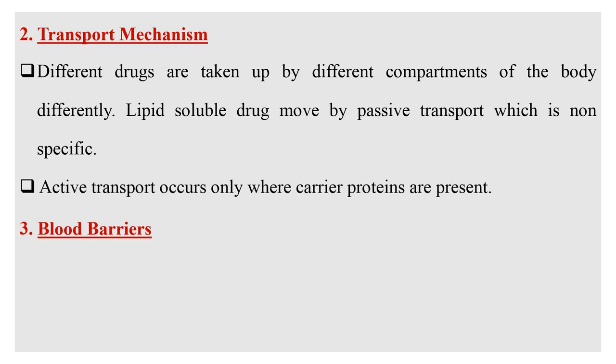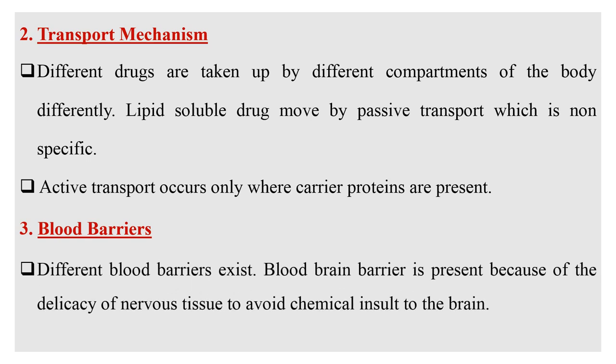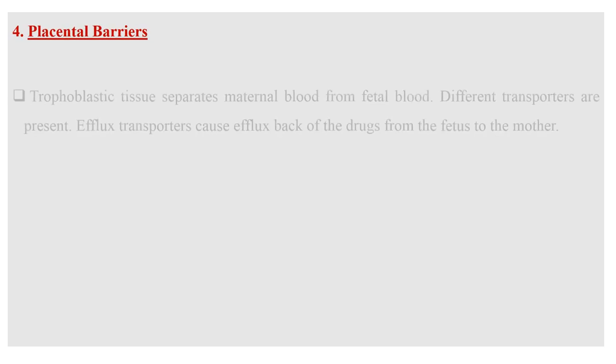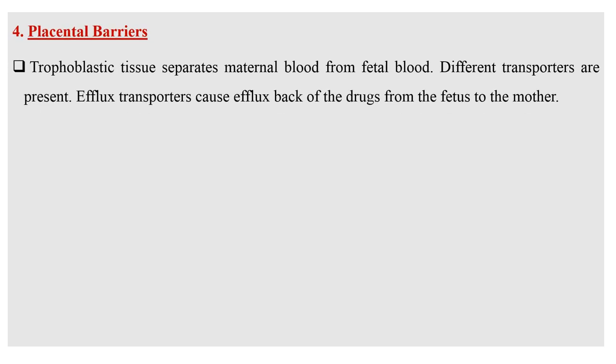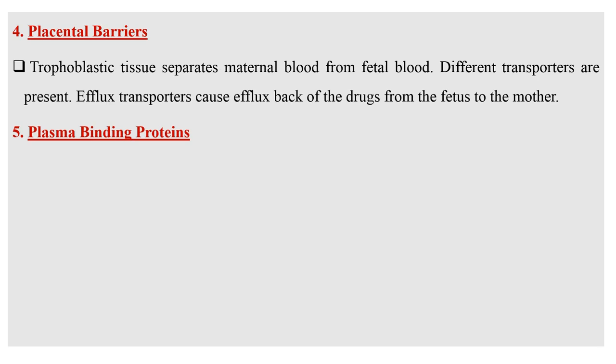The next factor is blood barrier. Different blood barriers exist. The blood-brain barrier is present because of the delicacy of nervous tissue, to avoid chemical insult to the brain. The next factor is the placental barrier. Trophoblastic tissue separates maternal blood from fetal blood. Different transporters are present there, and efflux transporters cause efflux of the drug back from the fetus to the mother.